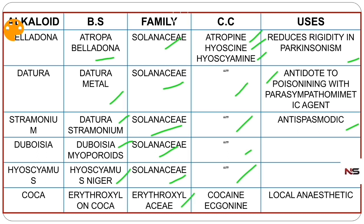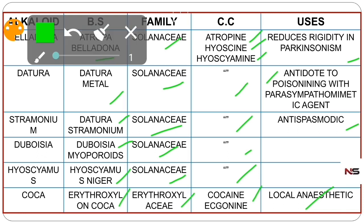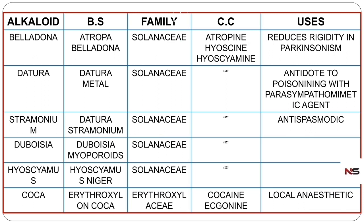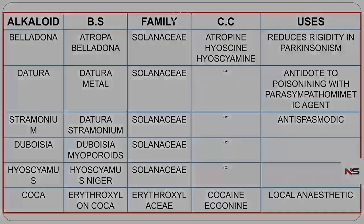The last one is coca. Coca belongs to the family Erythroxylaceae. Its biological source is Erythroxylon coca. The chemical constituents are cocaine and ecgonine. Coca is used as a local anesthetic.